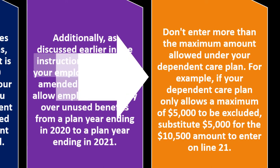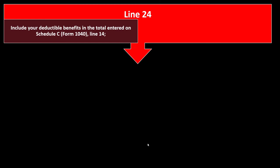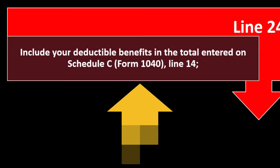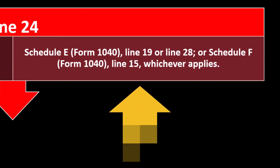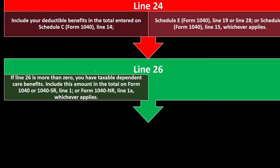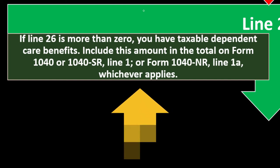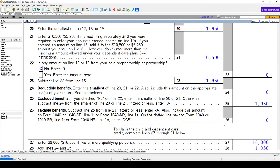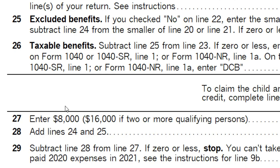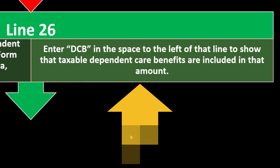Line 24: Include your deductible benefit in the total entered on Schedule C (Form 1040) line 14, Schedule E line 19 or 28, or Schedule F line 15 — whichever applies. Line 26: If line 26 is more than zero, you have taxable dependent care benefits. Include this amount in the total on Form 1040 or 1040-SR line 1, or Form 1040-NR line 1A, whichever applies. Enter 'DCB' in the space to the left of that line to show the taxable dependent care benefits are included in that amount.